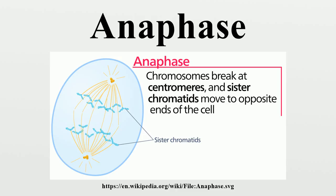Anaphase starts when the anaphase-promoting complex marks an inhibitory chaperone called securin with ubiquitin for destruction. Securin is a protein which inhibits a protease known as separase. The destruction of securin unleashes separase, which then breaks down cohesin, a protein responsible for holding sister chromatids together.